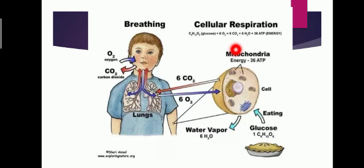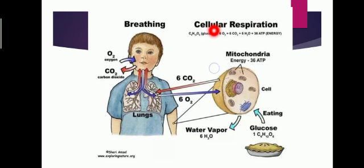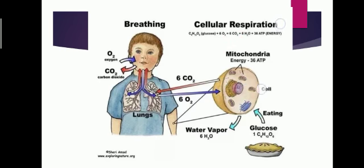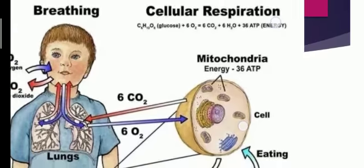Now let us know the meaning of cellular respiration. Cellular comes from the word cell. The respiration that takes place in the cell is known as cellular respiration. In cellular respiration, glucose is broken down in the presence of oxygen to give carbon dioxide, water, and energy in the form of ATP.